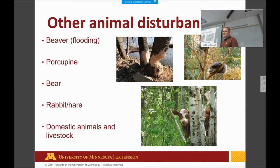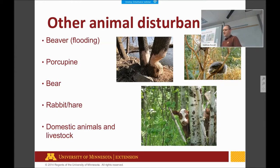We deal with other animal disturbances as well — things like beaver flooding can cut down trees and lead to management issues. Porcupines are a big problem, as are bear, rabbits and rabbit browse. Domestic animals and livestock matter too — silvopastures, where we try to grow trees and livestock at the same time, are very common in this area, and any regeneration in a silvopasture stand presents challenges that require adjustment.